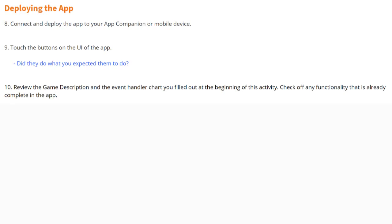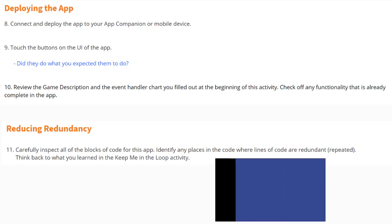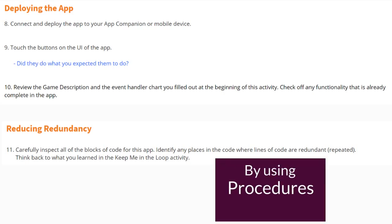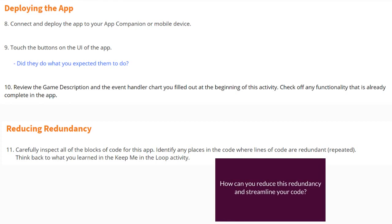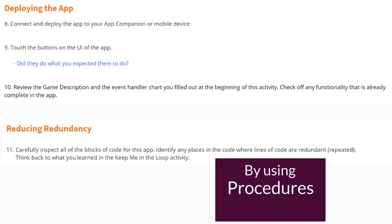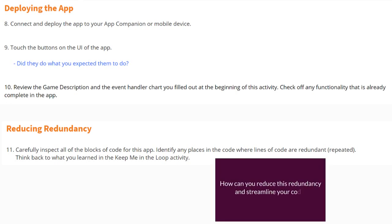Check off any functionality that is already completed for this app. Our main objective is to reduce the amount of redundant code found within our charades game app. You'll need to carefully inspect all of the blocks of code, identify any places where lines of code are redundant or repeating. Think back to what you learned in the keep me in the loop activity.